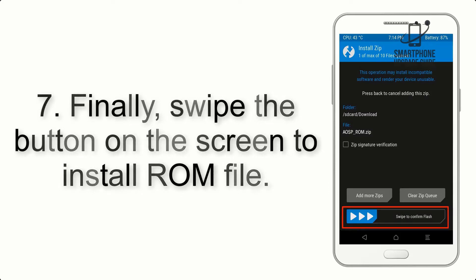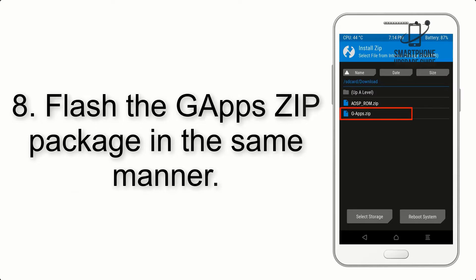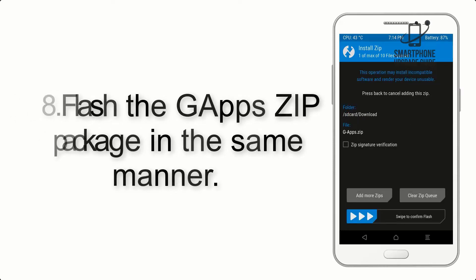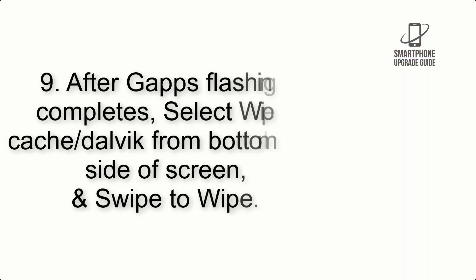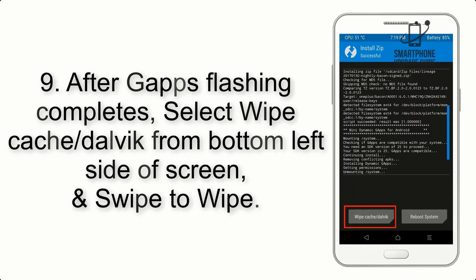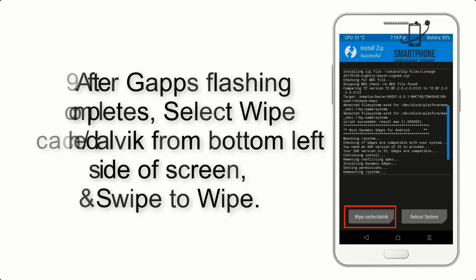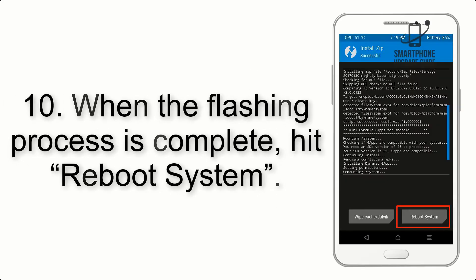Step 7: Swipe the button on the screen to install the ROM file. Step 8: Flash the GApps zip package in the same manner. Step 9: After GApps flashing completes, select Wipe Cache and Dalvik from the bottom left side of the screen and swipe to wipe.